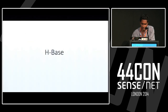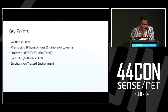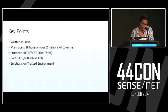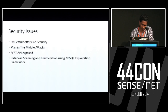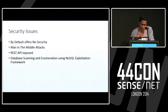HBase is also written in Java. The main point is we have billions of rows by millions of columns. It uses the HTTP REST protocol. It runs on port 6379 or 80 for the REST API by default, and also gives emphasis to restricted environments. Security issues include: no security by default, man-in-the-middle attacks, and the REST API is very much exposed.